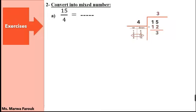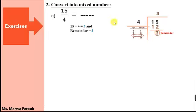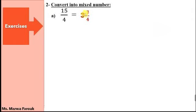Do we have any other numbers to bring down? No. So this is the remainder — 3 is the remainder. Then the result of the division is the whole number, and the remainder is the new numerator. So I'm going to write it like this: 3 and 3 over 4. The denominator doesn't change. The whole number is the quotient and the numerator is the remainder.